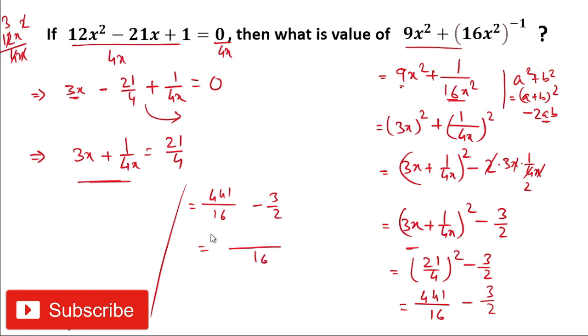We'll take LCM 16. It is 441 as it is, and 8 times 3 is 24. Now 441 minus 24 is 417, divided by 16. So friends, this is our answer which was asked.